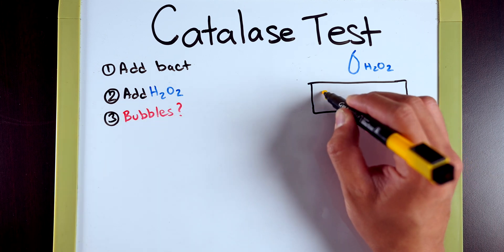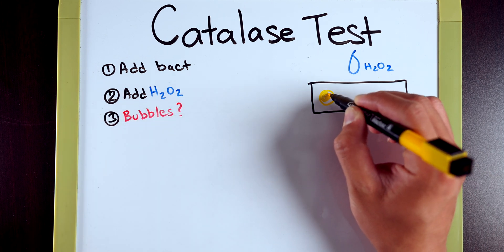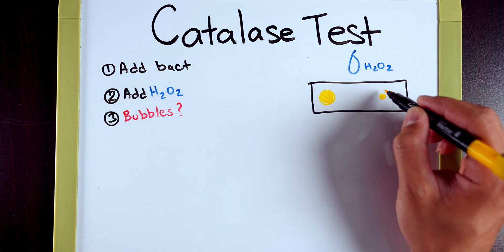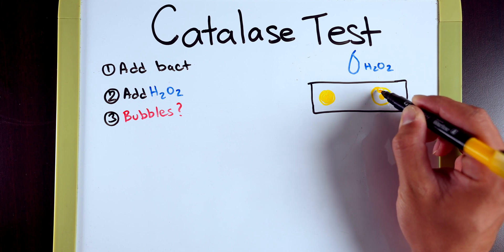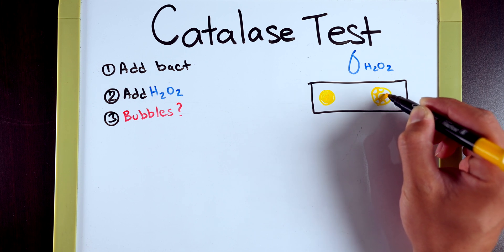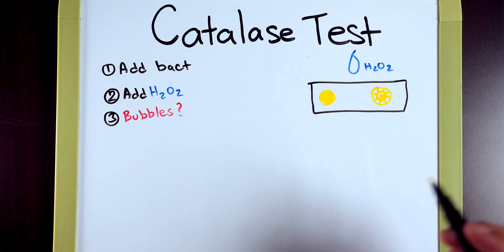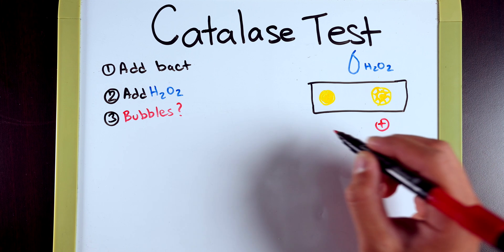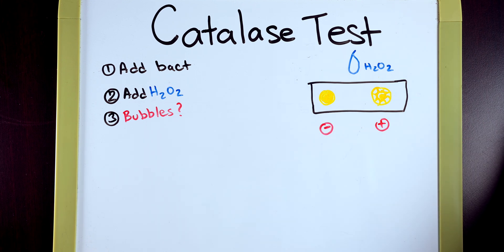So one of these bacteria when you add the hydrogen peroxide will just be pretty much inert and nothing will happen. But the other one, when you do add the hydrogen peroxide, you'll notice the formation of bubbles and it's going to be pretty rapid as well. So this indicates to us that we have a positive result and this means that we have a negative result.